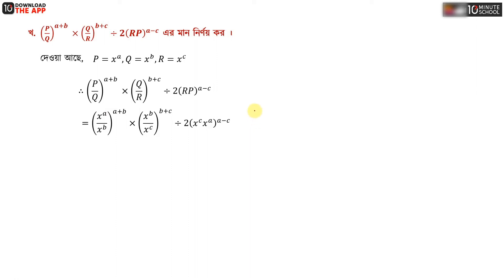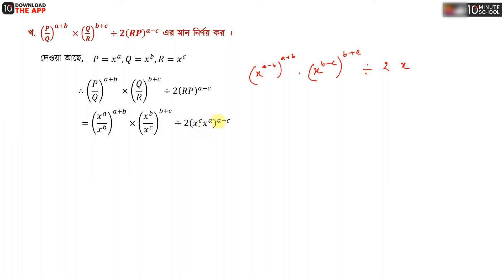We fill in: x to the power a minus b, times a plus b, then x to the power b minus c, times b plus c, then 2 into x to the power c plus a, times x to the power a minus c.